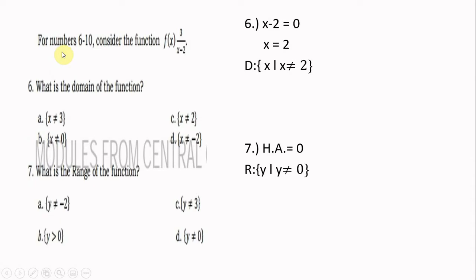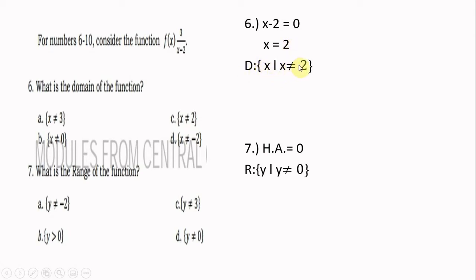For numbers 6 to 10, consider the function f(x) = 3/(x − 2). What is the domain of the function? To find the domain, equate the denominator to zero: x − 2 = 0, so x = 2. This is our vertical asymptote, and the domain is the set of x such that x should not be equal to 2. That is letter A.